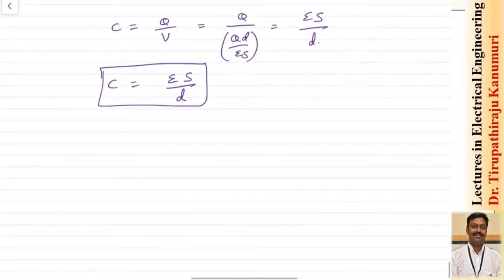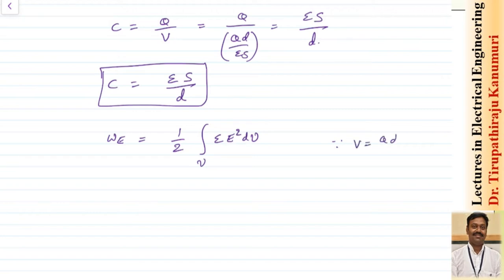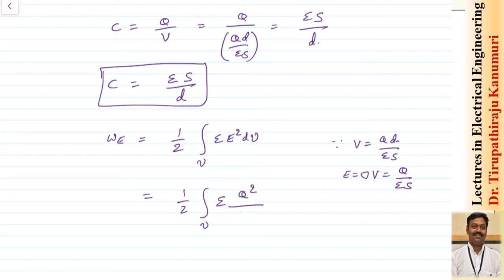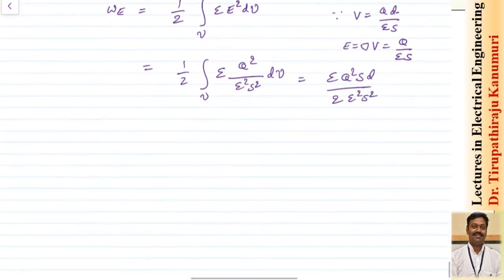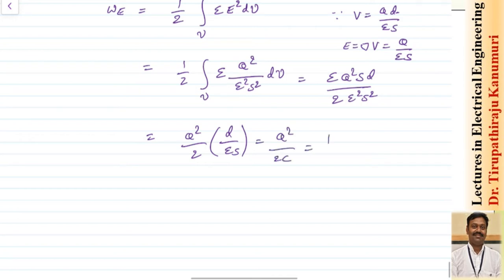The energy stored in the capacitor is given by half the volume integral of epsilon·E² dv. Since V equals q·d divided by epsilon·S, the electric field E equals gradient of V, which gives q divided by epsilon·S. Substituting into the energy integral: the volume integral of epsilon times q² over epsilon²·S² dv becomes epsilon·q²·S·d divided by 2·epsilon²·S². Simplifying gives q² divided by 2C, or equivalently half q·V, or half C·V².